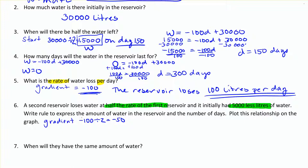And my initial amount for the first graph was, we can see up here, 30,000. So my y-intercept initially was equal to 30,000. And this second graph, the second reservoir, has 5,000 less, so we'll take 5,000 away from that and we get 25,000.